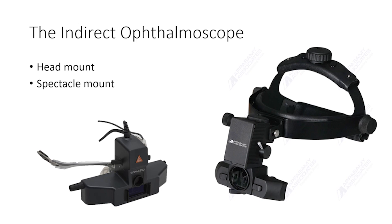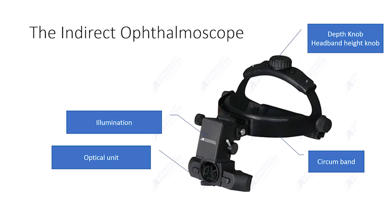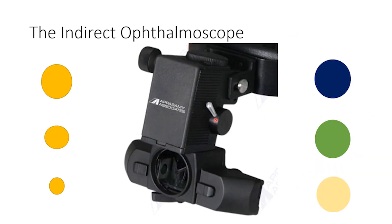There are two commonly available models of binocular indirect ophthalmoscope. The head-mounted model is more sturdy and the more popular one. The spectacle-mount is used for convenience and portability as it can be hung around the examiner's neck when not in use. The instrument has an illumination source, observation optics, a housing with power supply and electronics, and a headband. The knobs or levers on the sides are for changing the illumination spot size and for using filters like cobalt blue for fluorescein angioscopy, green for red-free examination to look for nerve fiber layer defects, and the yellow filter for light-sensitive eyes.